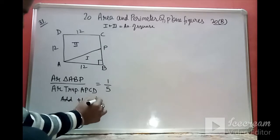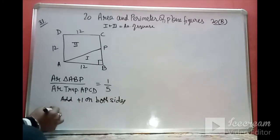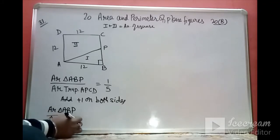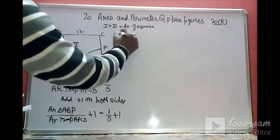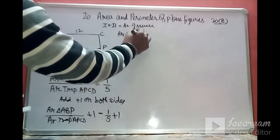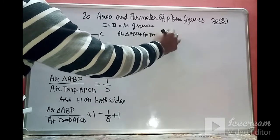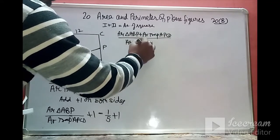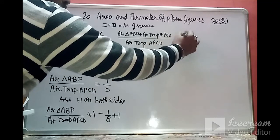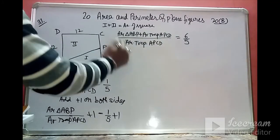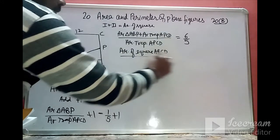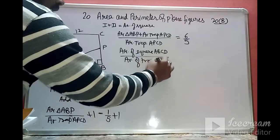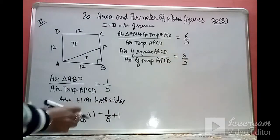Adding 1 to both sides of the ratio: area of triangle ABP upon area of trapezium APCD plus 1 equals 1 upon 5 plus 1. This gives (area of triangle ABP plus area of trapezium APCD) upon area of trapezium APCD equals 6 by 5, which is the area of square ABCD upon area of trapezium APCD.